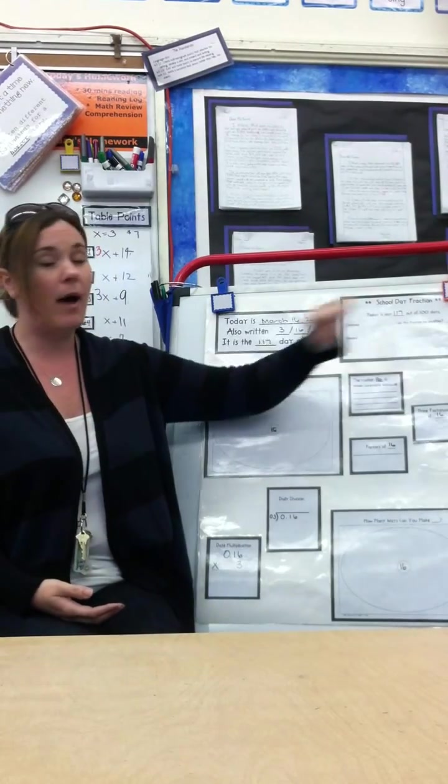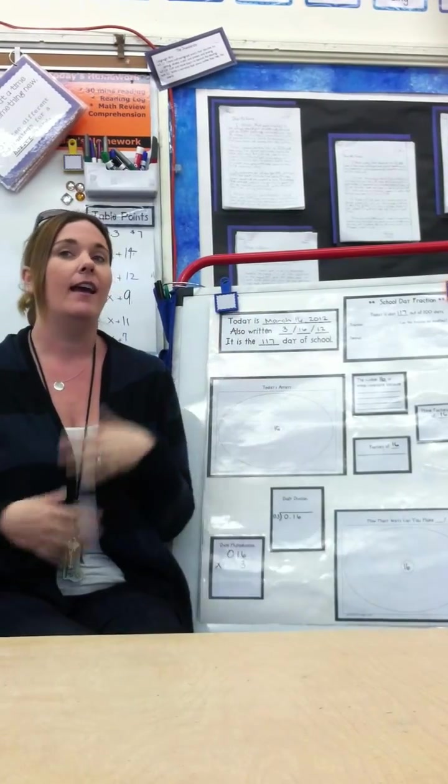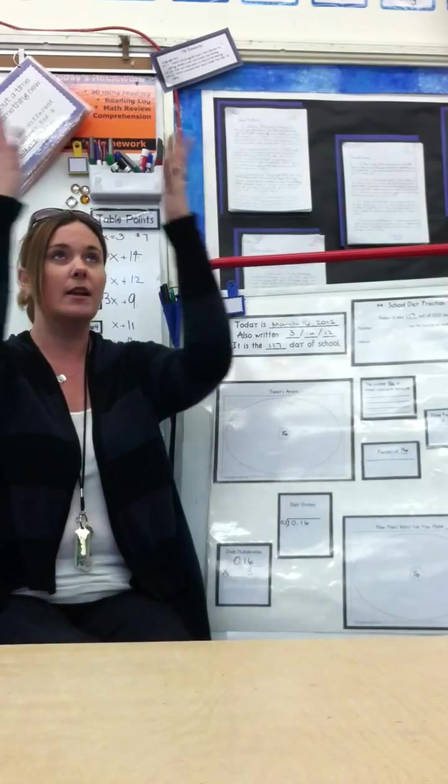The number on the bottom is the denominator. It's the total amount of pieces. And the kids actually do that. They put their numbers on top, parts shaded in, they say the total amount of pieces.